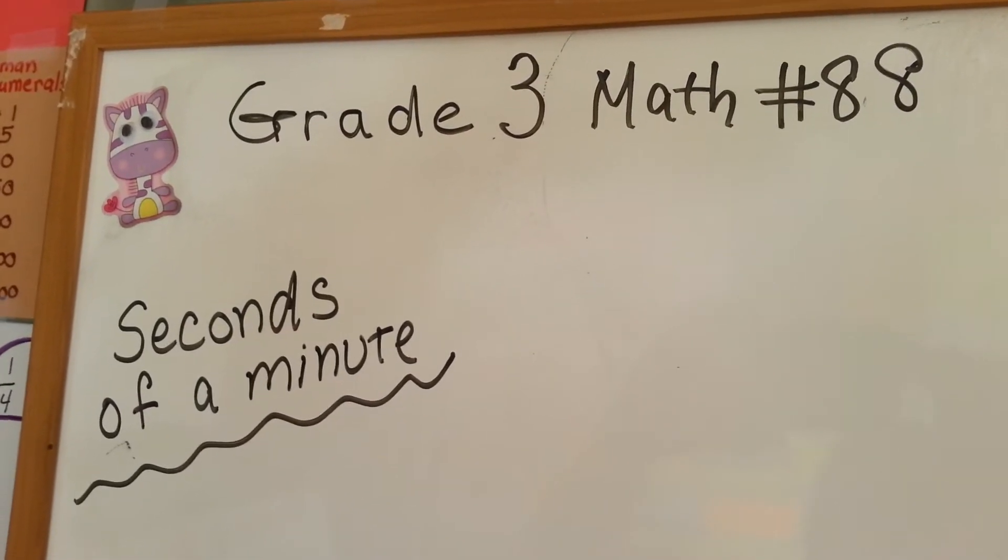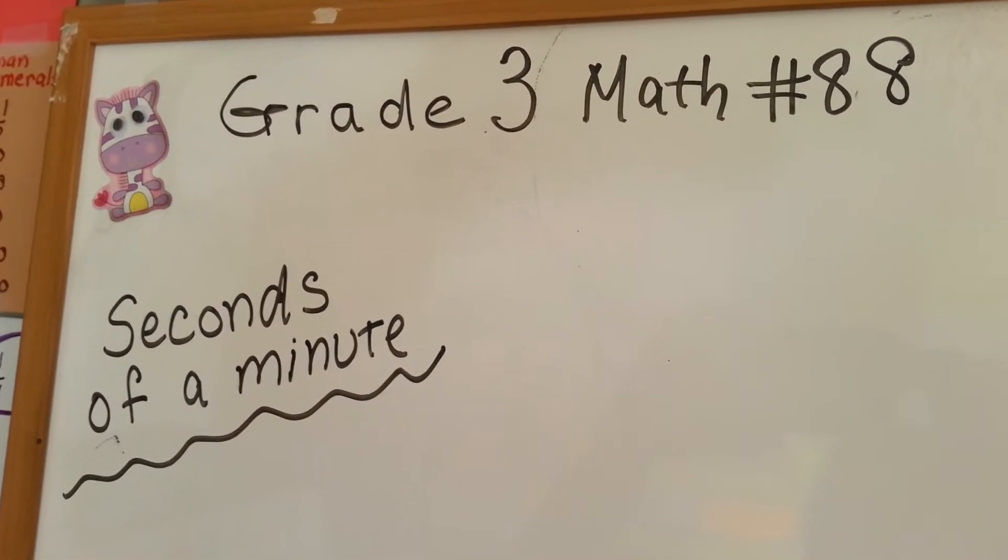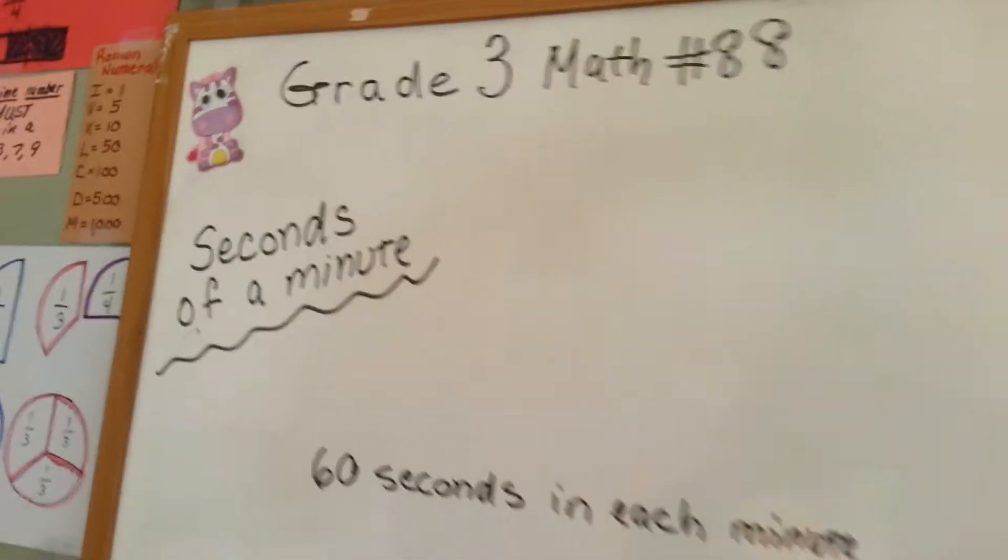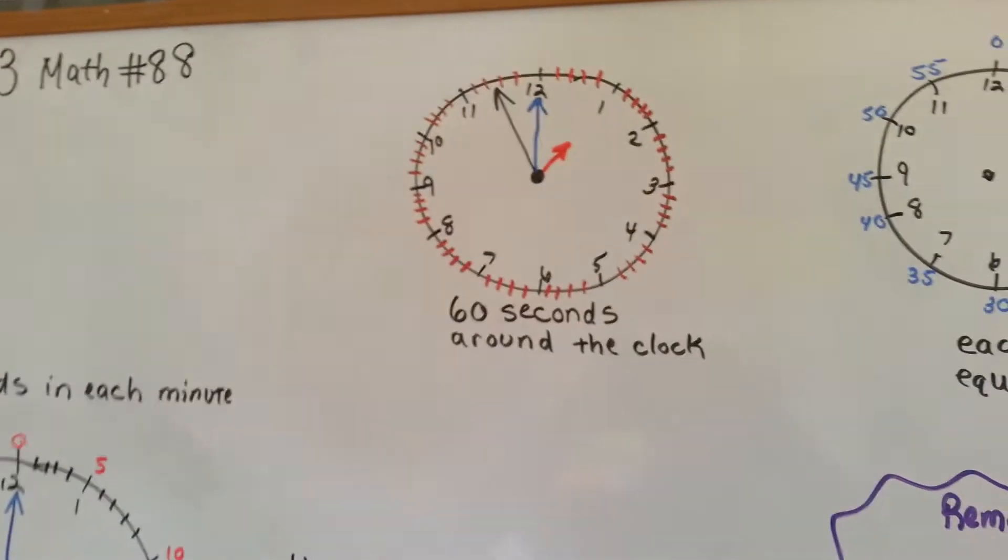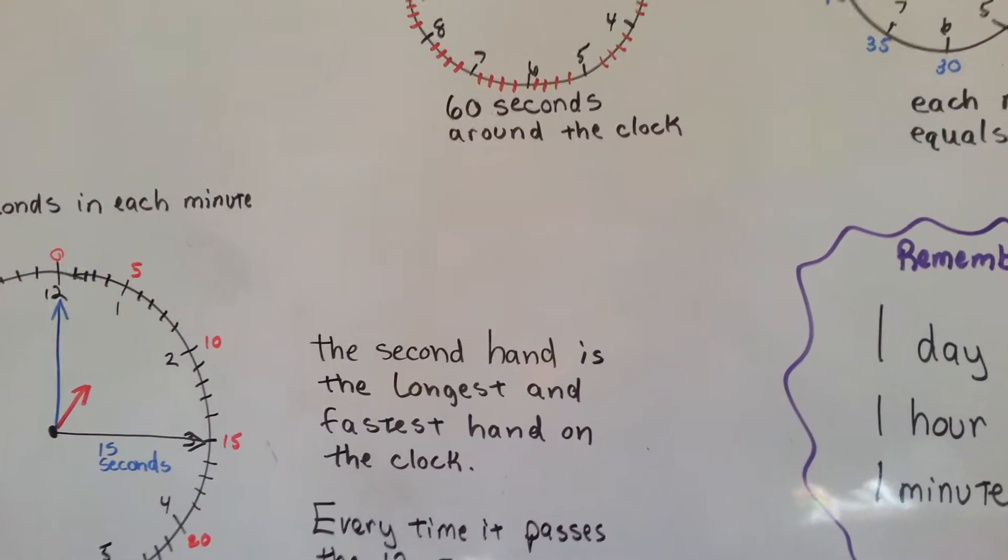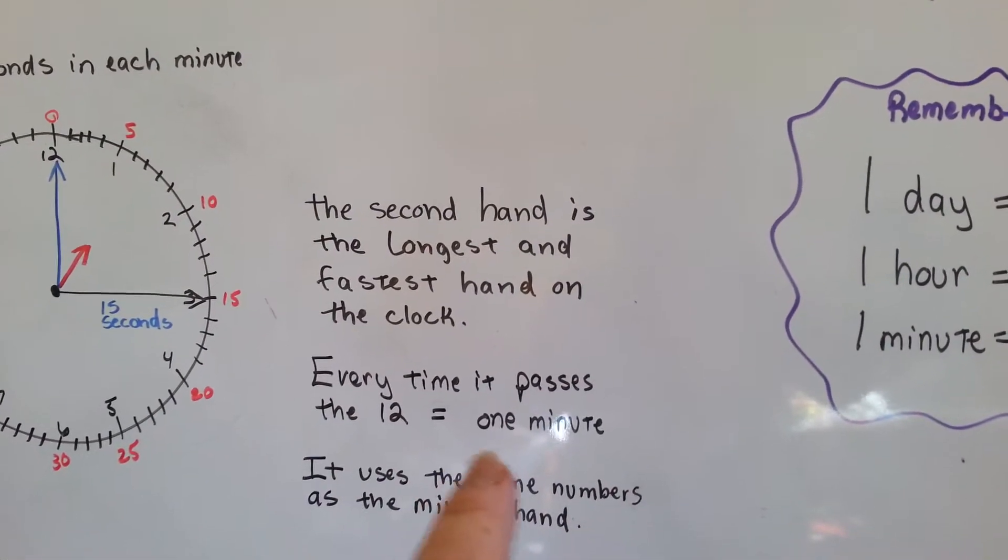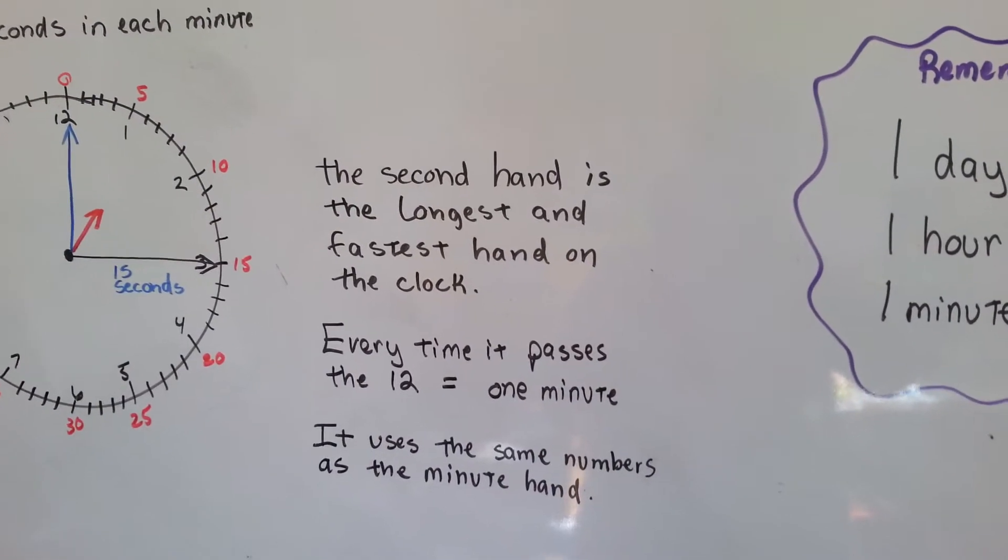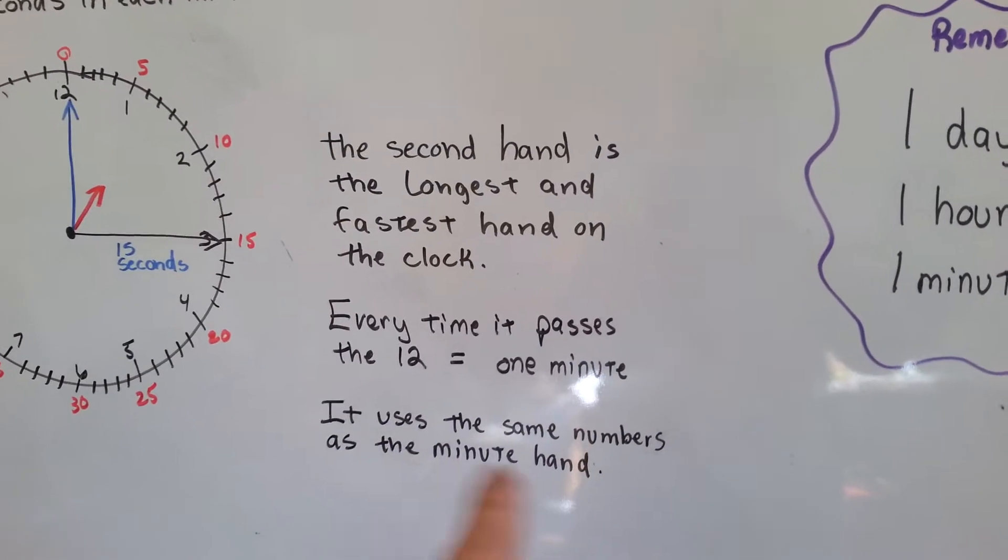Grade 3 Math number 88, Seconds of a Minute. The second hand is the longest and fastest hand on the clock. Every time it passes the twelve, it's one minute. It uses the same numbers as the minute hand.